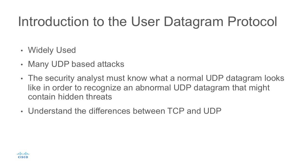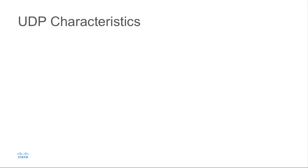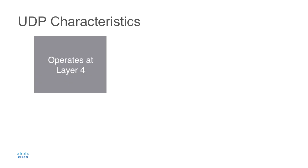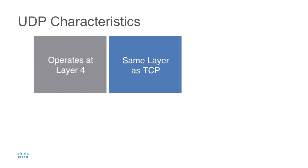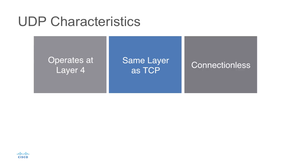As far as UDP characteristics go, UDP does operate at Layer 4 of the OSI model, so it is operating at the same layer as TCP, but its functionality differs. Where TCP was providing us with connection-oriented services, UDP provides us with what we would consider connectionless.